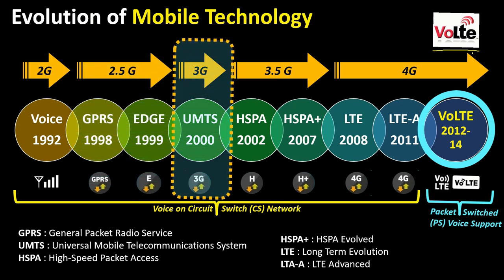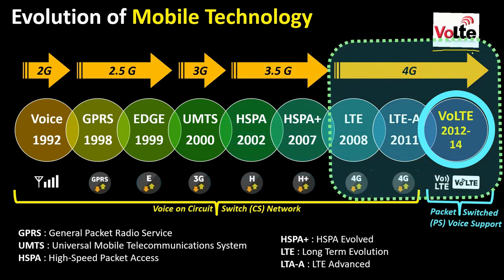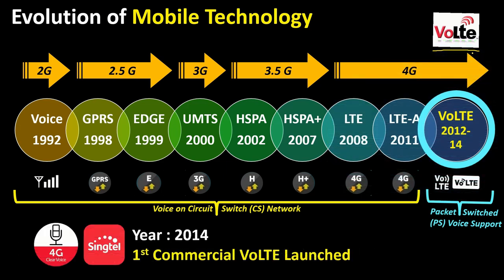3G is a network with better data speeds that also provides voice support. H or H+ is a super fast 3G network still in use. 4G or LTE is the latest technology with a bright future, expected to play a significant role for the next 5 to 6 years until 5G launches. Coming back to VoLTE, voice over LTE was available to end users in 2014, when Singtel Singapore became the first operator to launch commercial VoLTE services, enabling users to make or receive voice calls on the 4G network.